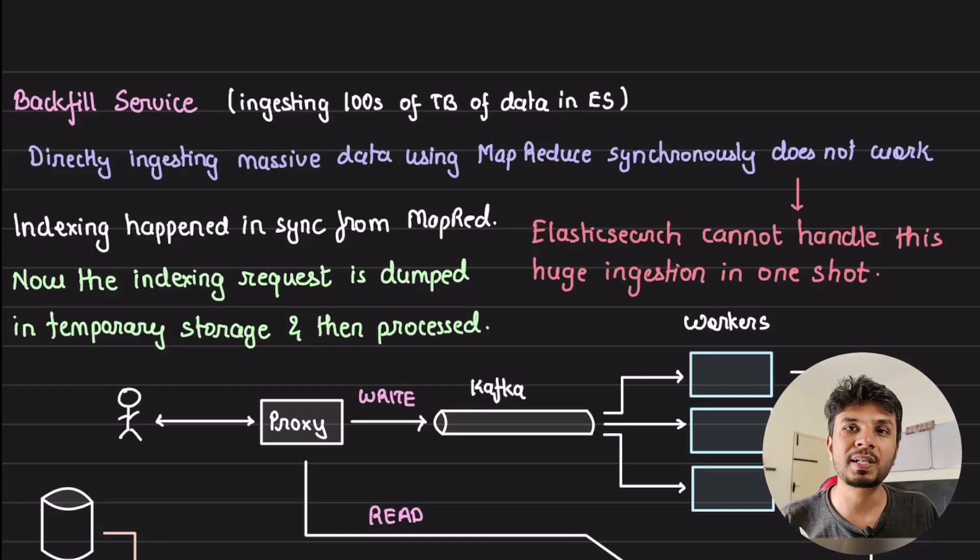Now this is where the problem starts to creep in. When you have large number of reducers running which is taking a lot of data, mappers taking a lot of data, passing it to reducers, reducers ingesting into it into Elasticsearch in synchronous call, it would put load onto Elasticsearch. Now imagine transferring hundreds of terabytes of data. Elasticsearch would cry. It is not possible for Elasticsearch to handle such high, such huge ingestion in a single shot. So which is where you have to do it in a staggered way.